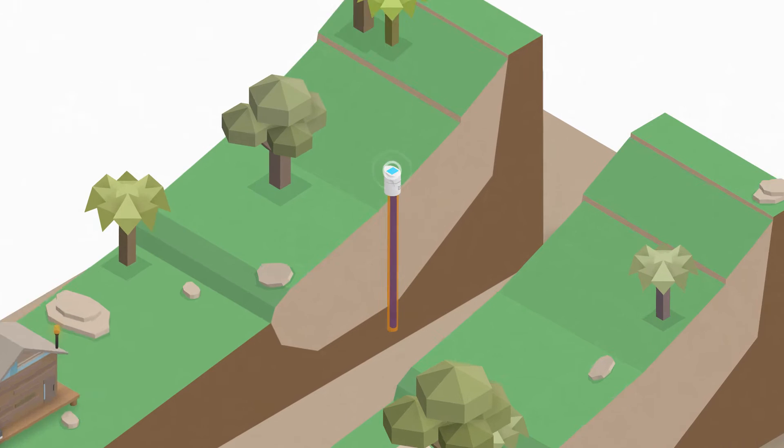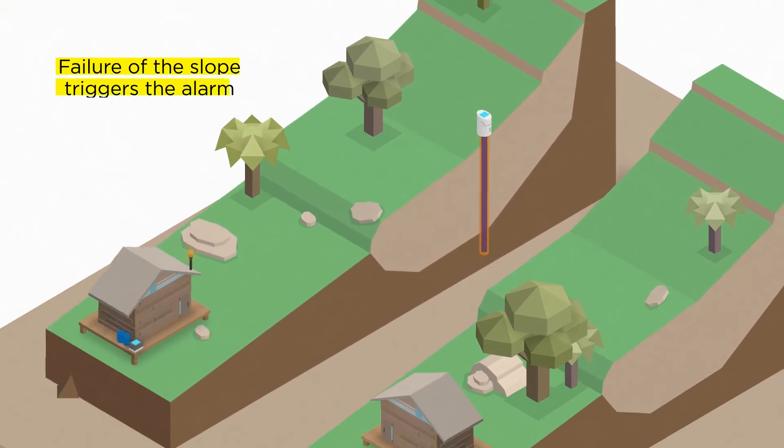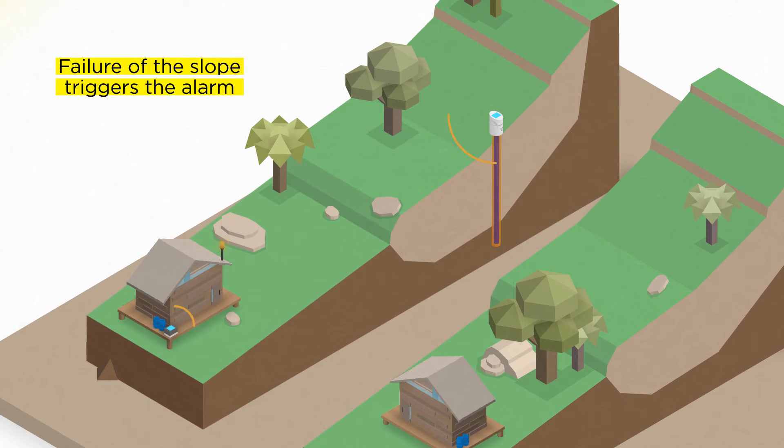The louder the noise, the faster the slope is being displaced. If the noise exceeds a preset threshold, a warning is transmitted to the base station in the community.